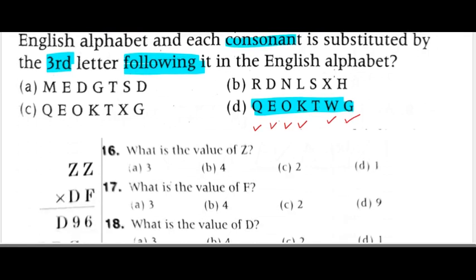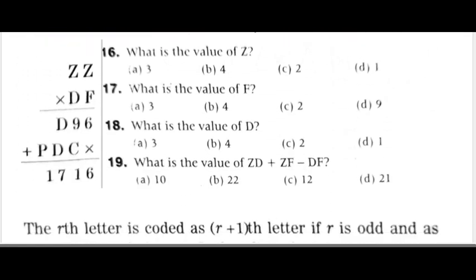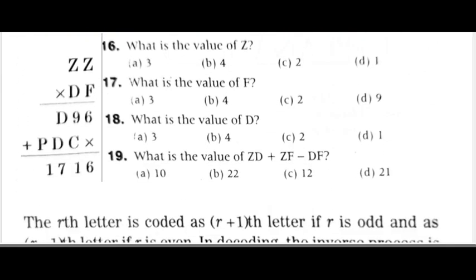Now this question: Z is the 1's digit, this is the 10's digit, multiplied by F gives 96. P, D, C — the answer is 1776. So questions 16, 17, 18, 19 — two minutes to solve them. It's 11:07 — we will check the answers.